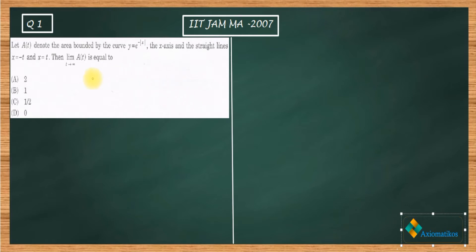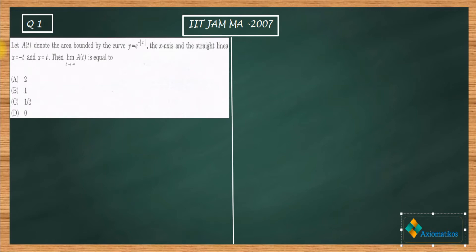The question says: let A(t) denote the area bounded by the curve y = e^(-|x|), the x-axis, and the straight lines x = t and x = -t. The question asks for the limit as t goes to infinity of A(t). We need to draw these two curves: y = e^(-|x|) and the two lines x = t and x = -t.